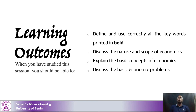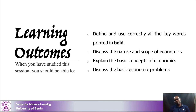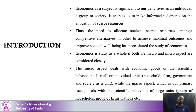The most popular definition, given by Lionel Robbins, says that economics is the social science which studies human behavior in relation to ends and scarce means which have alternative uses. This allows us to see a breakdown of economics into different aspects of life.